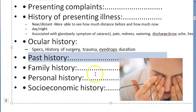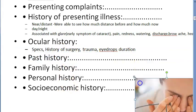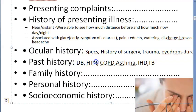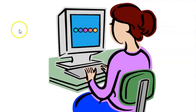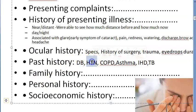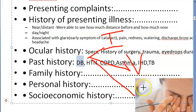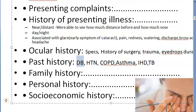In past history, ask whether the patient has diabetes, hypertension, COPD, asthma, ischemic heart disease, or tuberculosis. Diabetic patients have early onset cataract; in true diabetic cataract you see a snowflake or snowstorm cataract due to sorbitol accumulation in the lens. Diabetics are also prone to infections, diabetic retinopathy, vitreous hemorrhage, tractional retinal detachment, and neovascular glaucoma.